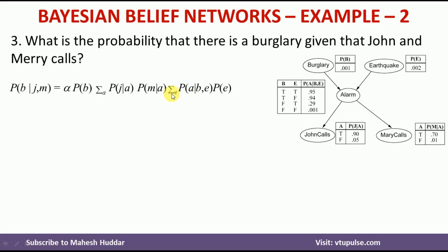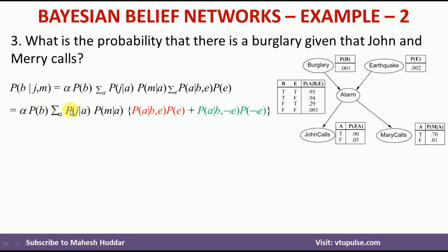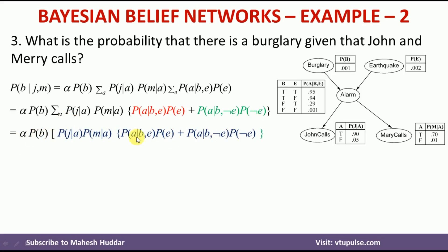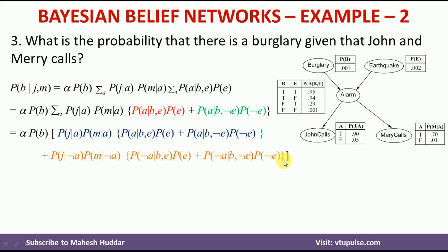In the next step, we expand by putting E once and negation of E once. I copied the same expression and changed it so that within curly braces we have: P(A | B, E) × P(E) plus P(A | B, ¬E) × P(¬E). Similarly, we consider both alarm and no alarm since it is not given to us. Wherever there is A, I consider A in the first case and negation of A in the second case, replacing every occurrence of A with ¬A in the second term.